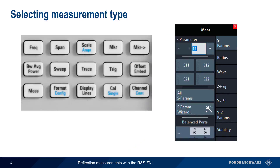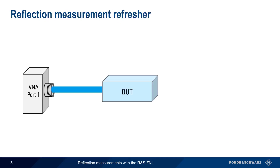To select the measurement type on the ZNL, press the Measure hard key and then choose S11 under S-Parameters, since we'll be connecting our DUTs to port 1. S22 would be selected if we were connecting our one-port device to port 2 on the ZNL. Remember that an S11 measurement transmits power on port 1 and measures the power that's reflected back from the device under test and received back on port 1.